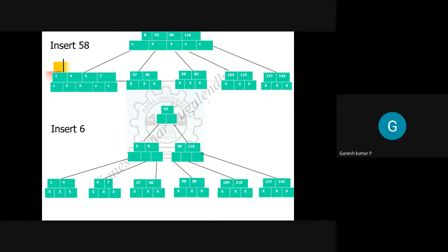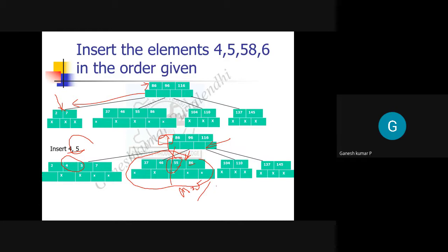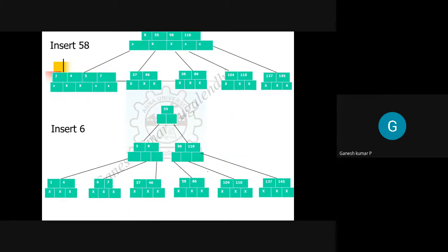After the split, you have nodes 7, 46 on one side and 58, 86 on the other. Now insert element 6. Inserting 6 would overflow the node, so divide it into two halves again, moving the median element up one level. If that parent is also a full node, divide again. Move 55 to the top and place 5 on the left side of 8. Continue this process until you find the correct position for 6.